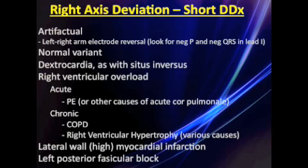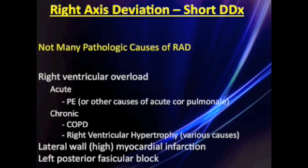Here are the causes of right axis deviation — again, there are not many. The first few are non-pathologic. Up until right ventricular overload, which in the acute setting can be caused by pulmonary embolisms, and chronically by COPD. And right ventricular hypertrophy, which has various causes such as valvular regurgitation and pulmonary hypertension. And finally, lateral wall myocardial infarctions — usually higher up — and as we already mentioned, left posterior fascicular blocks.